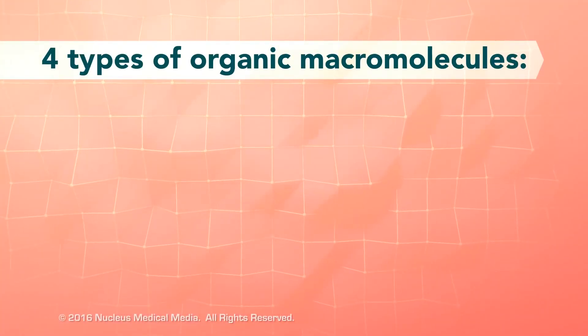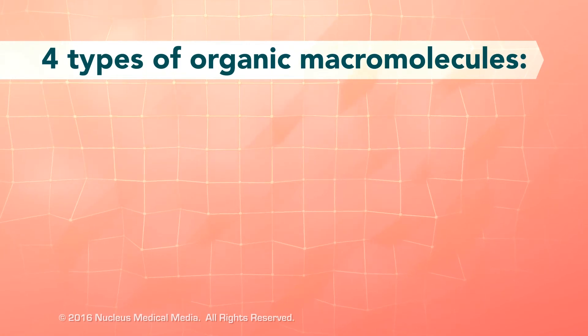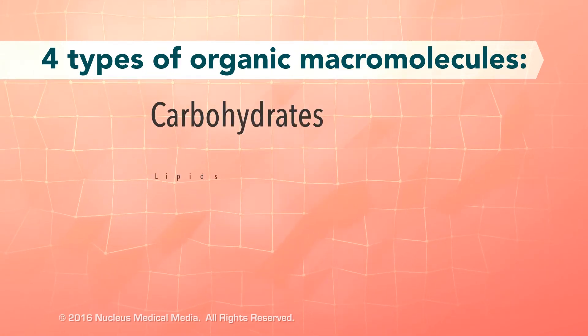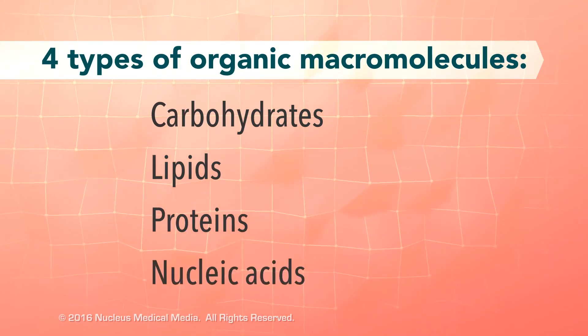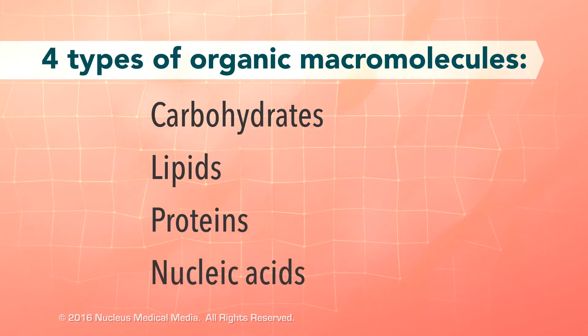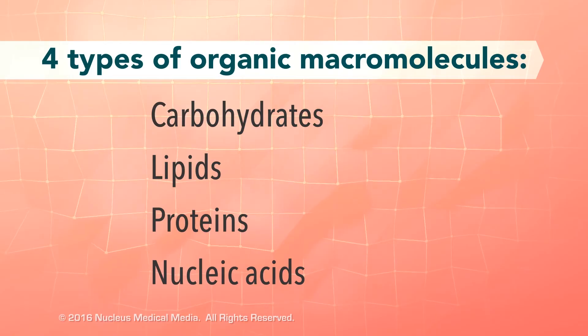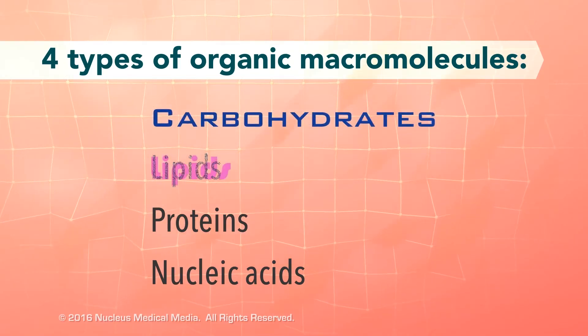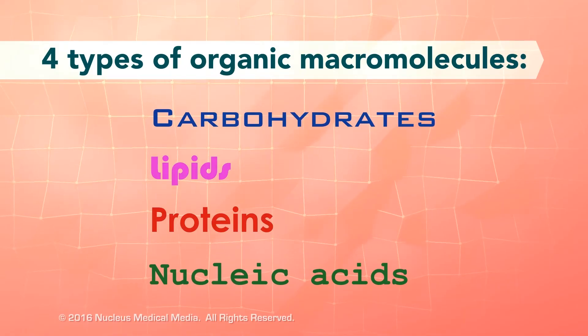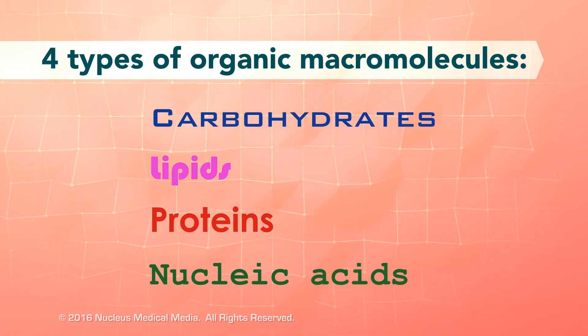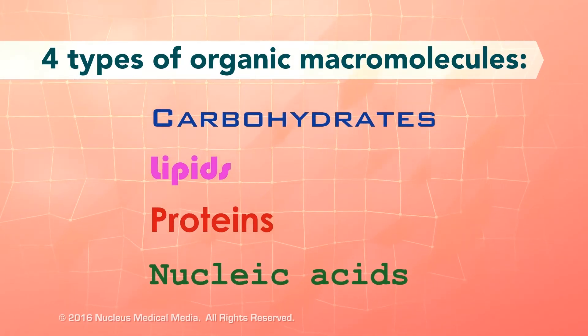The four types of organic macromolecules are carbohydrates, lipids, proteins, and nucleic acids. Although they are all very large molecules, each type of organic macromolecule is distinct and different from the others. We'll discuss these four types of macromolecules in more detail separately.